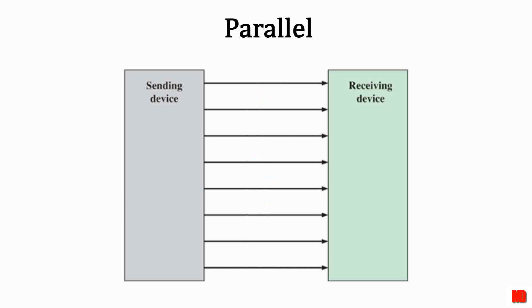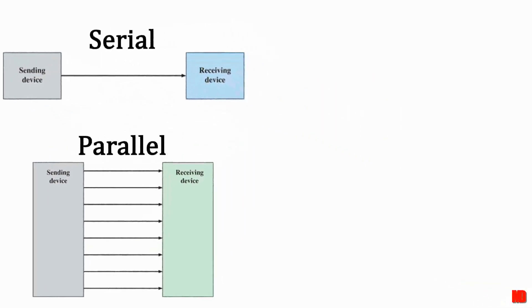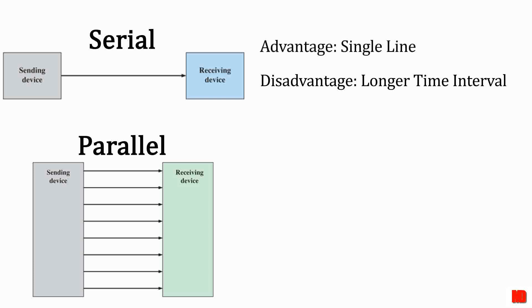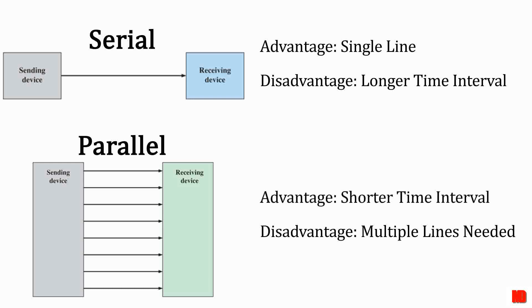You can imagine, then, that there is some sort of trade-off occurring here. And there is. With serial data transfer, only one line is needed to transfer the data. However, it takes longer. With parallel transfer, much less time is needed to transfer the data, but you need more lines to carry the data.